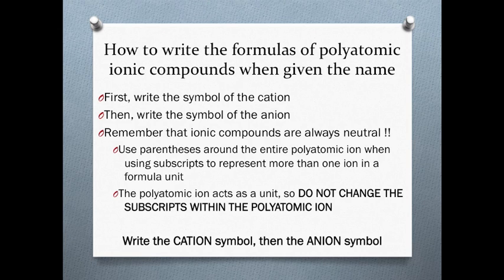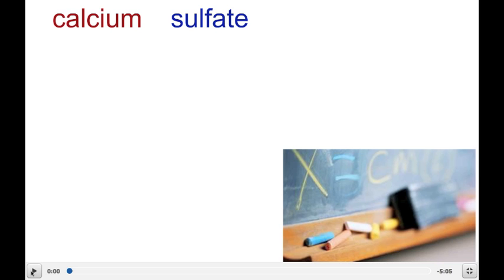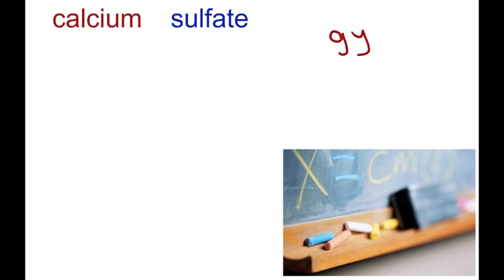Let's look at a couple of practice problems together. Calcium sulfate is an example of an ionic compound with a polyatomic ion in it. Calcium sulfate is known as gypsum, which is the substance that blackboard chalk is made of. Anyway, calcium, the ion, has a positive 2 charge.